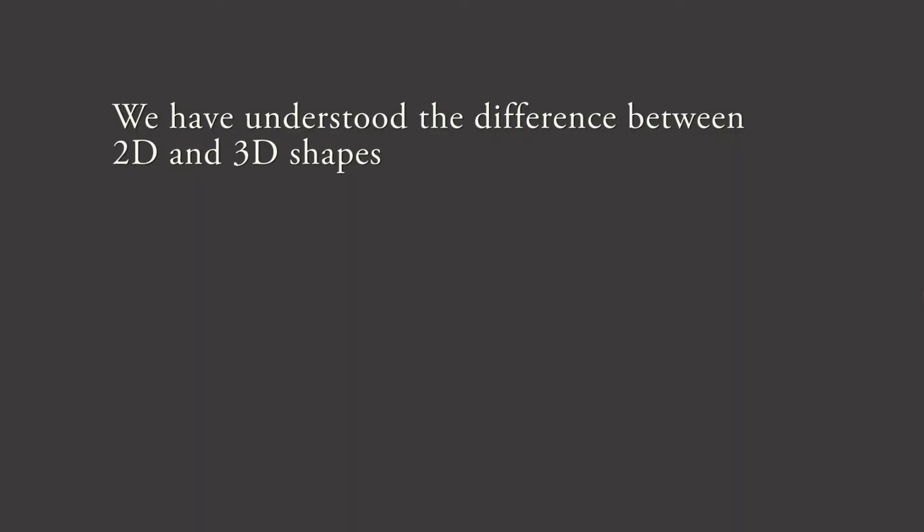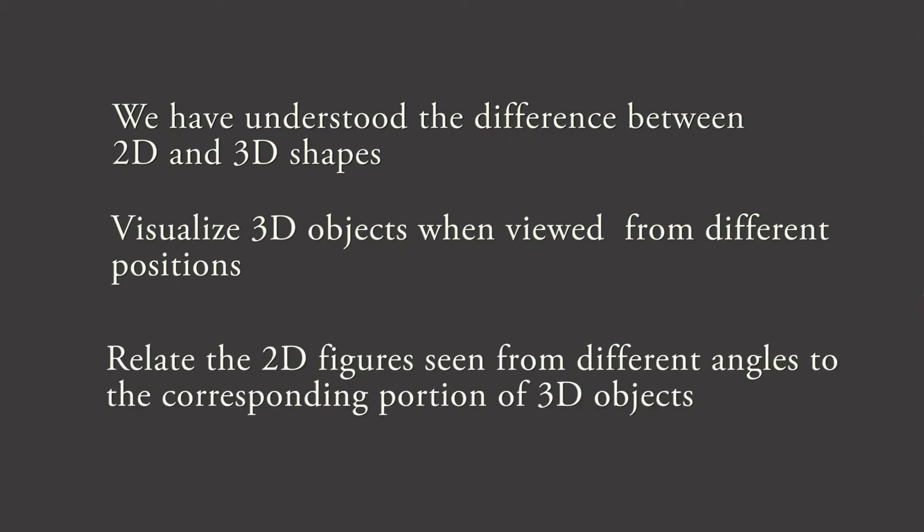Before we conclude this lesson, let us recapitulate what we have learnt today. We have understood the difference between 2D and 3D shapes. Also, we tried to visualize 3D objects when viewed from different positions. We also related the 2D figures seen from different angles to the corresponding portion of the 3D objects. Thank you and have a nice day.